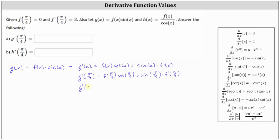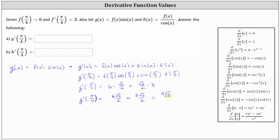Continuing, g prime of pi divided by four is equal to f of pi divided by four, which is given as six, times cosine pi divided by four, which equals square root two divided by two, plus sine of pi divided by four, which is also square root two divided by two, times f prime of pi divided by four, which is given as three. Simplifying, we have six square root two divided by two plus three square root two divided by two, which equals nine square root two divided by two. G prime of pi divided by four equals nine square root two divided by two.